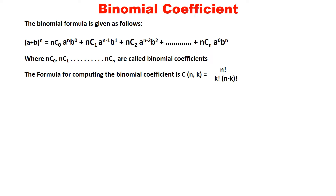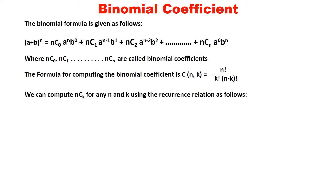The formula for computing the binomial coefficient — all of us know this, you would have done it earlier. We represent it as C(n, k), which is nothing but n factorial divided by k factorial times (n minus k) factorial. This can also be represented as a recurrence relation.